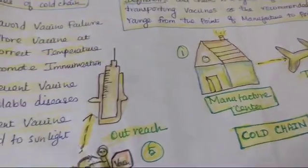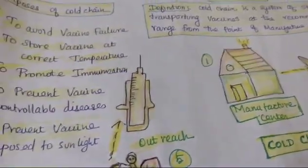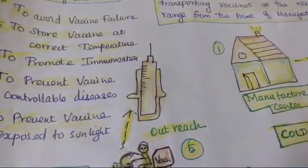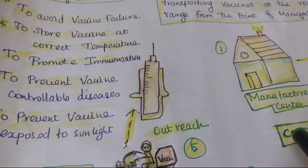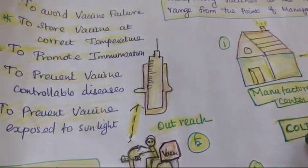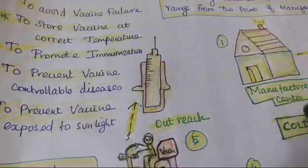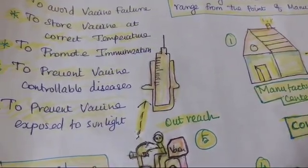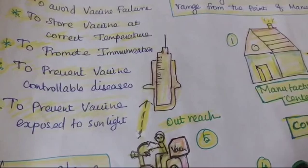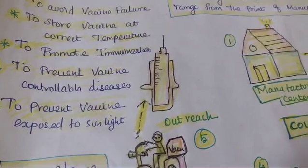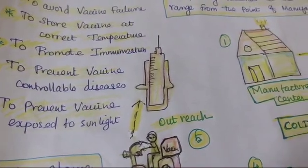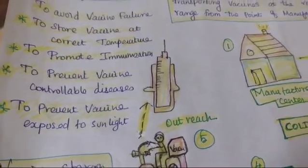Why do we have to maintain it? What is the purpose of this cold chain? To avoid vaccine failure, to store the vaccine at the correct temperature, to promote immunization, to prevent vaccine-controllable diseases, and to prevent the vaccine from being exposed to sunlight.